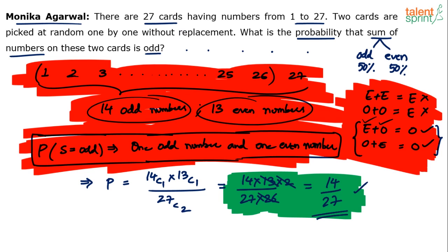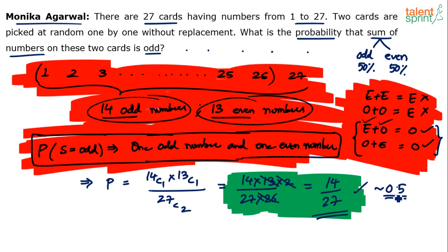There are 14 odd cards and only 13 even cards, so there is a higher chance of the sum being odd. The probability of sum being odd is slightly greater than 0.5 — since 13.5/27 would be exactly 0.5, and 14/27 is a little more than 0.5. If only one option is slightly more than 0.5, you can directly mark that as the answer.